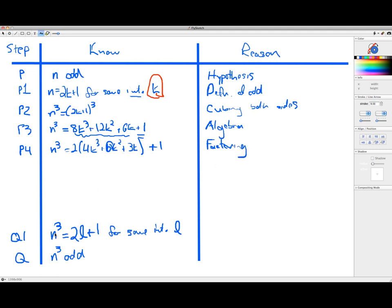So now look at what I have. I have n cubed equal to 2 times something plus 1. That sounds good. But remember, it can't just be 2 times anything. It has to be 2 times an integer. So I need to make one more step here and explain why I believe that this quantity right there is an integer. So I'm going to make that claim right here that 4k cubed plus 6k squared plus 3k is an integer.